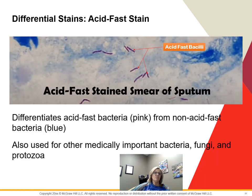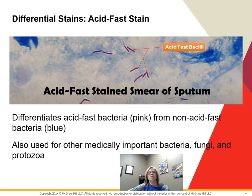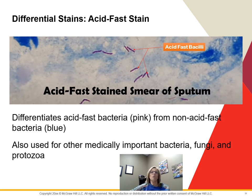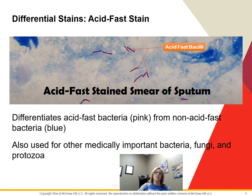The acid-fast stain differentiates acid-fast bacteria, which appear pink, from non-acid-fast bacteria, which appear blue. It originated to detect Mycobacterium tuberculosis, whose cell walls are impervious to dyes used in other methods and cannot be dyed with a gram stain. These bacteria hold fast to a dye called carbolfuchsin when washed with an acid-alcohol decolorizer — that's where the name comes from. It is also used for some other medically important bacteria, fungi, and protozoa.